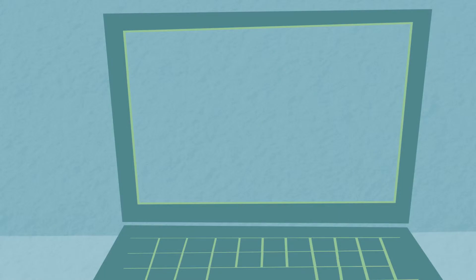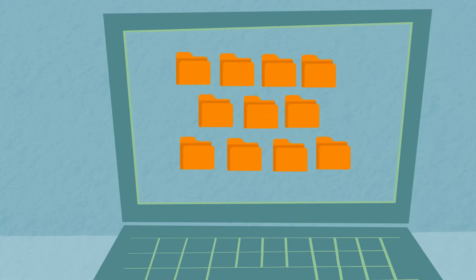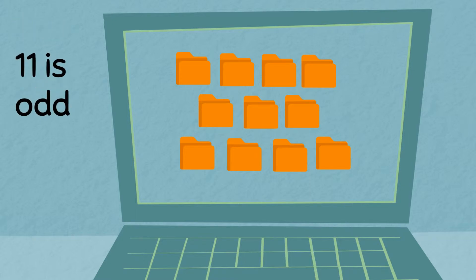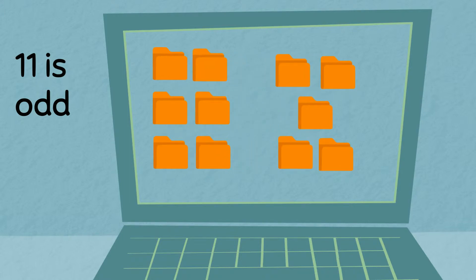This time we have eleven folders. Can you guess if this is even or odd? Great! This number is odd because we cannot divide it into two groups with equal numbers.